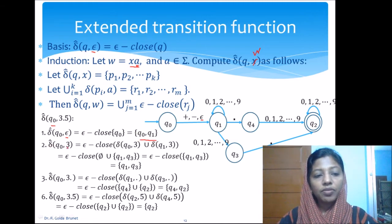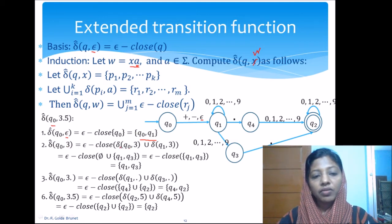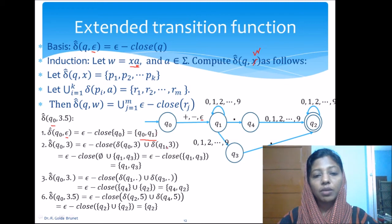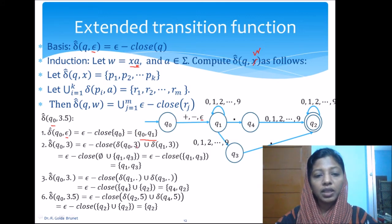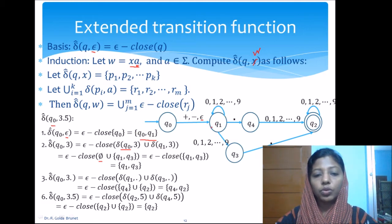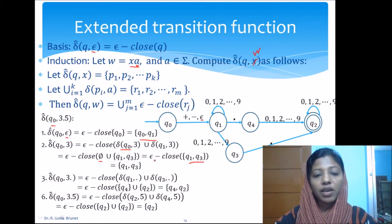Now for delta-cap of q₀ on '3', we compute the epsilon closure of delta(q₀, 3) union delta(q₁, 3), then apply the epsilon closure to the result. From q₀ on a digit we have no transition, so that part is empty. From q₁ on a digit we can stay at q₁ or move to q₃, giving {q₁, q₃}. Taking the union, we have {q₁, q₃}, to which we apply the epsilon closure.